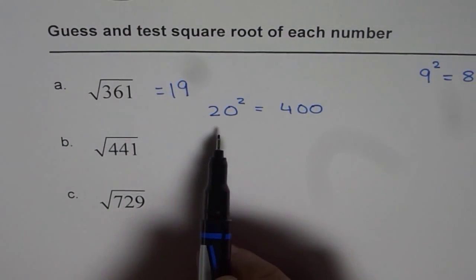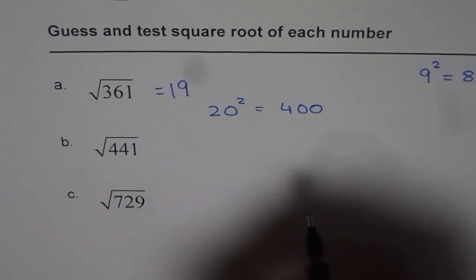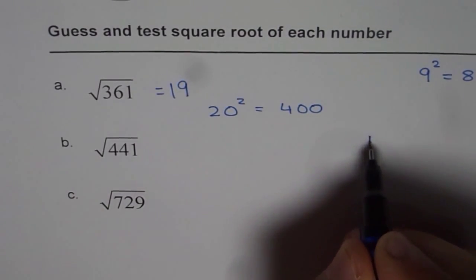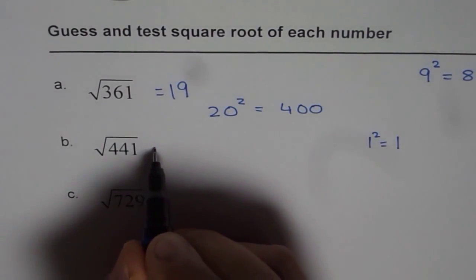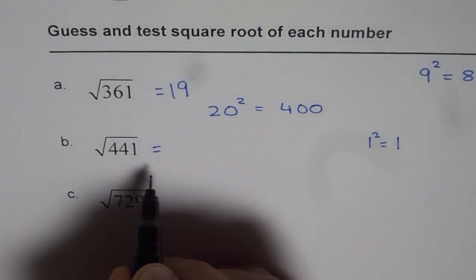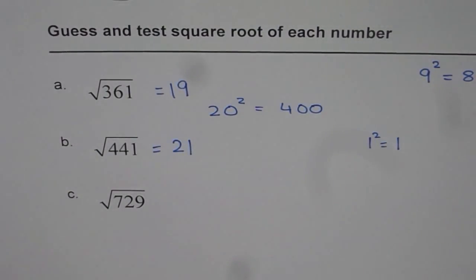Now 21 and 22 is my option for 441. Now 1 square is 1 which also ends with 1. So in this case, my option is 21. So that is the guess which I have made for this particular question.